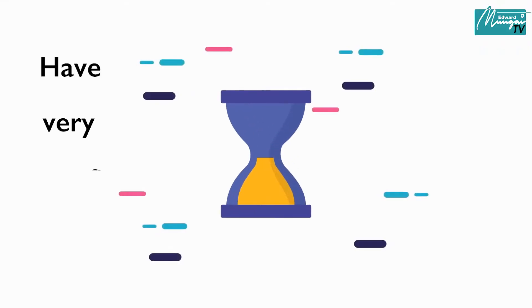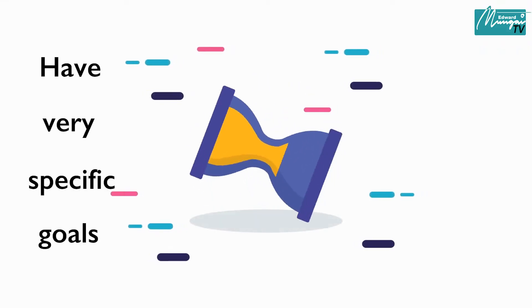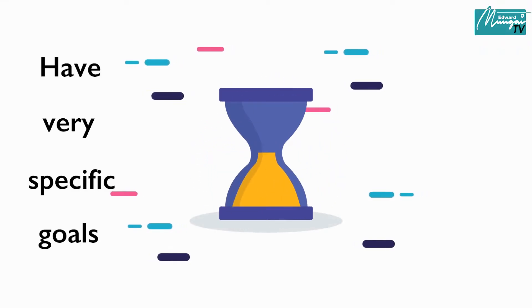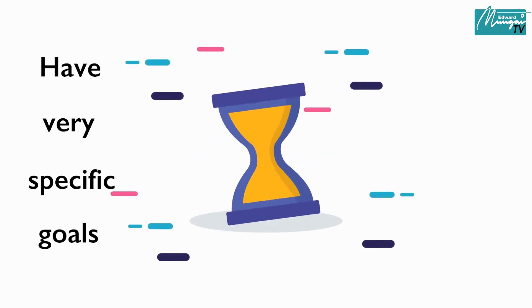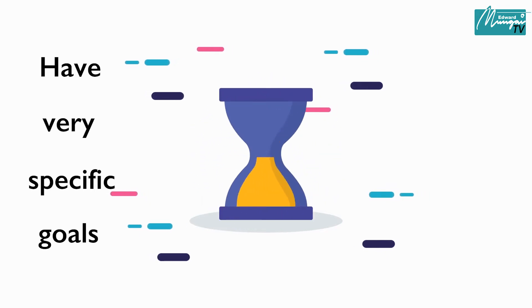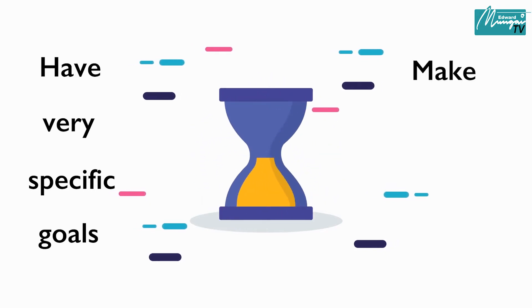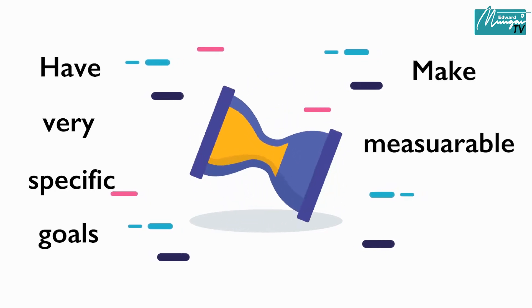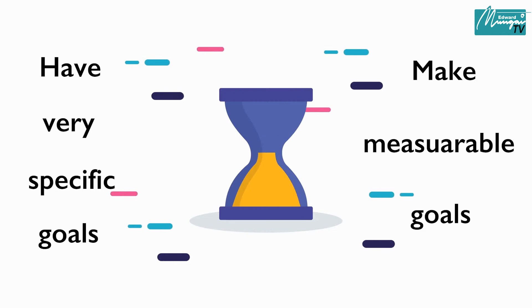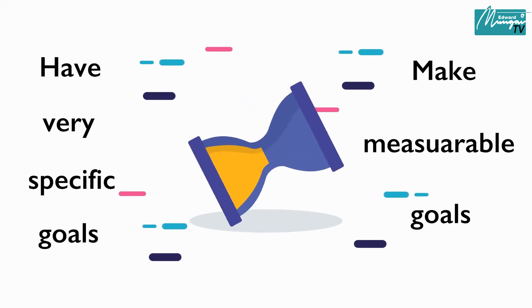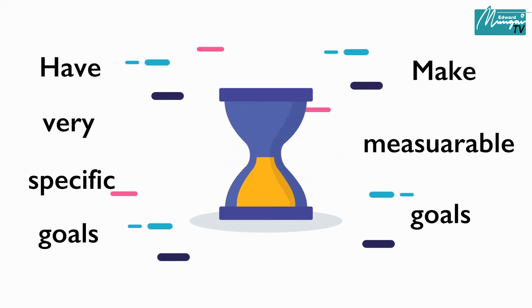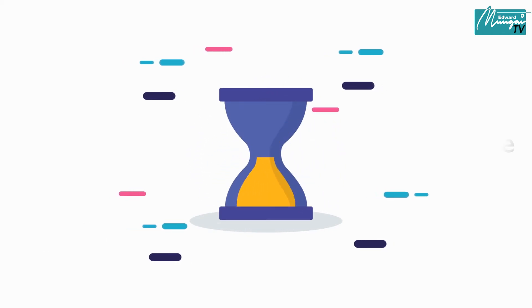So in totality, my friends, what we are saying is that you must be able to have very specific goals, goals that are well defined within the boundaries. You also must make them to be measurable. You must be able to measure, especially when you are doing monitoring and evaluation, because you need to monitor these goals.